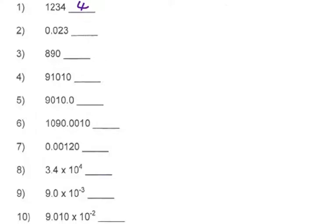This number right here has two significant digits. These zeros are called placeholder zeros and they're not significant, so they don't count — you scratch them out, you only have two significant digits. This number 890 has a trailing zero but there's no decimal in the number, so only the 8 and the 9 are significant. This number has two significant digits.